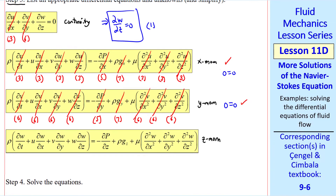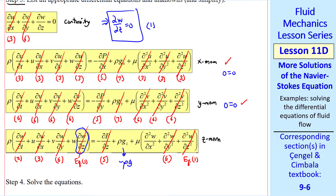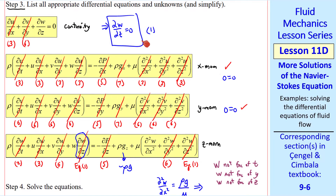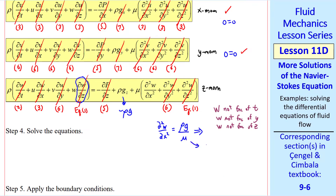Now the z-momentum equation. The flow is steady, u is zero, v is zero, and del w / del z is zero by continuity. Pressure is constant, but there is gravity in the z direction, so we leave in the negative rho g term. W is a function of x, so we keep that second-derivative term, but the y-derivative and the last term (from continuity) go away. The z-momentum equation reduces to d²w/dx² equals rho g / mu. Since w is a function only of x, we use total derivatives — this is our final simplified equation.